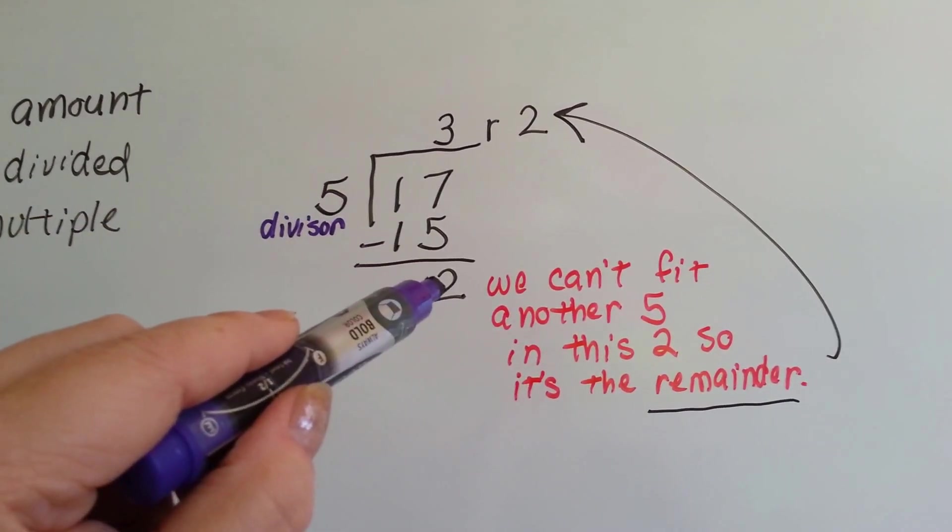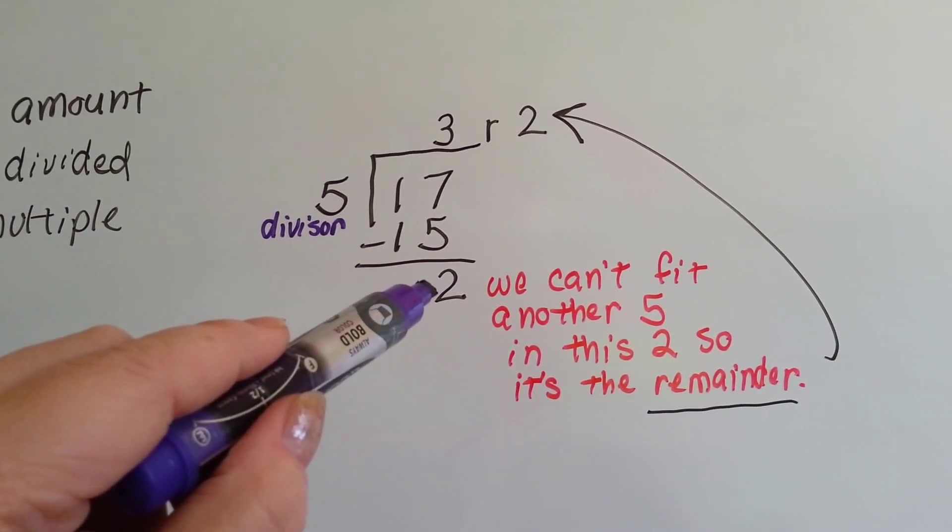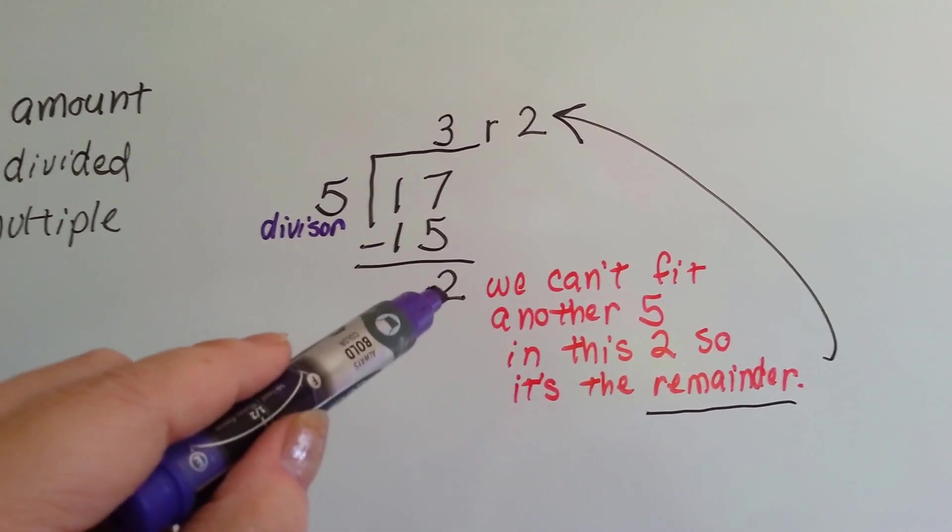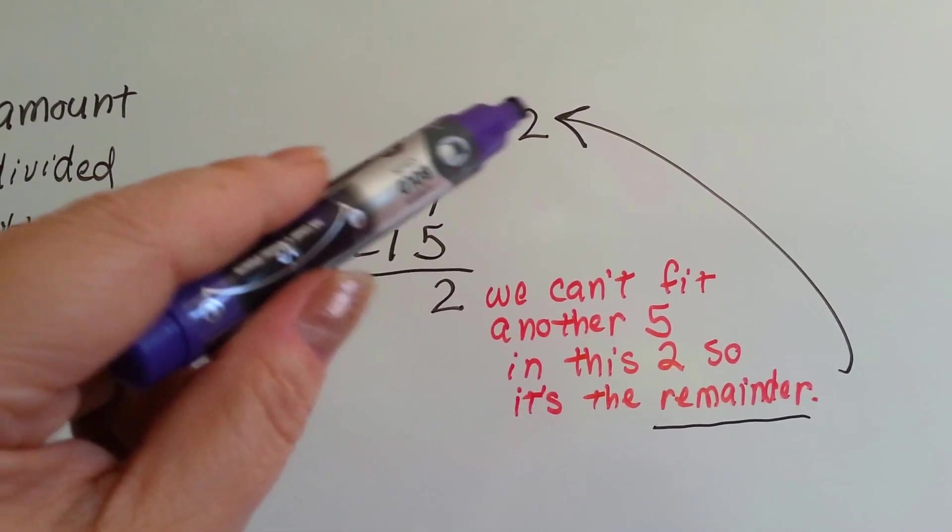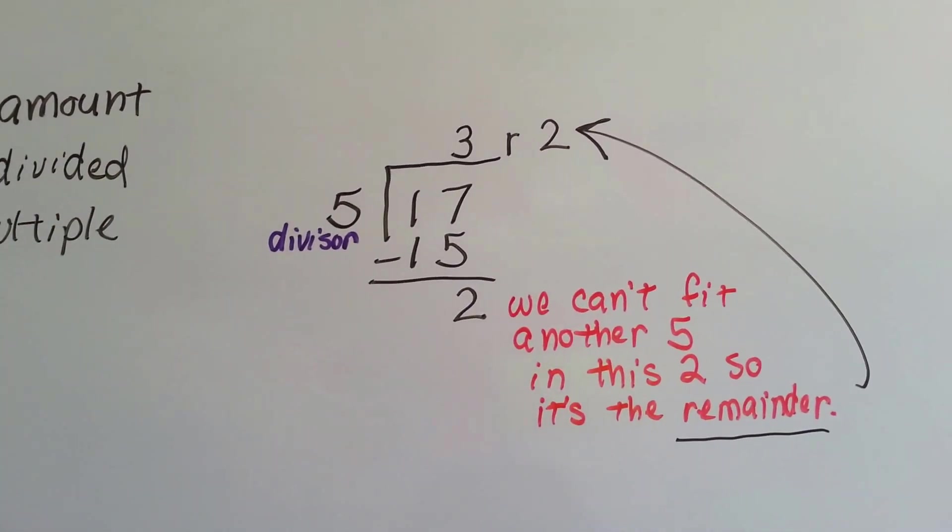Can 5 fit into 2? No. We can't fit another 5 in this 2, so the 2 is the remainder. How many 5's fit into 17? 3 of them with a remainder of 2 left over. See how that's done?